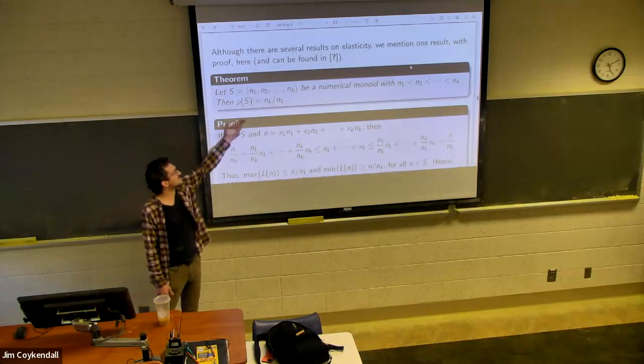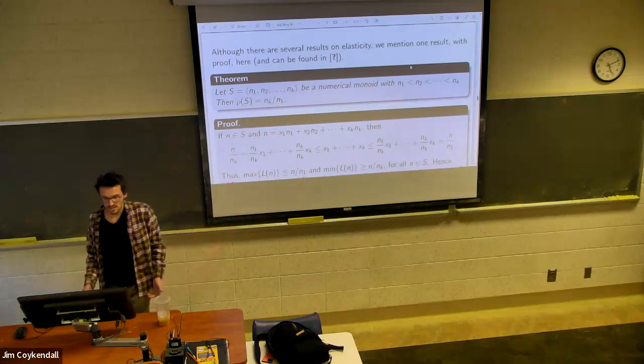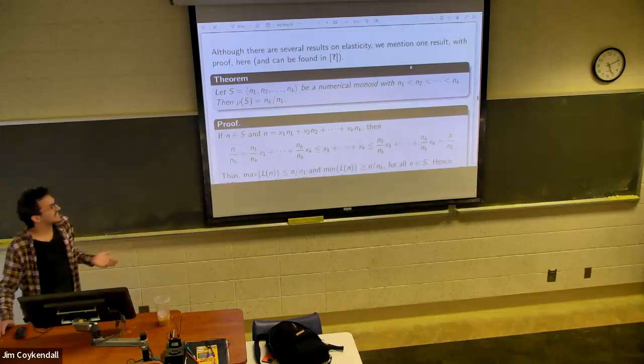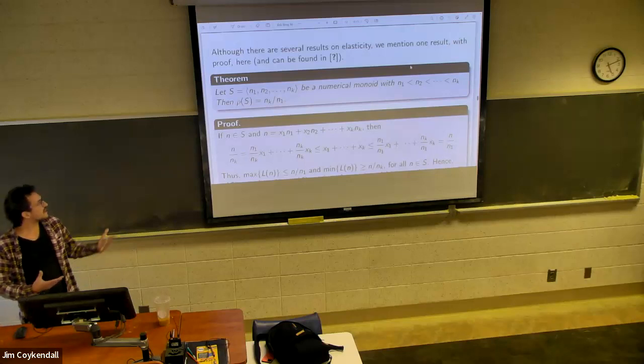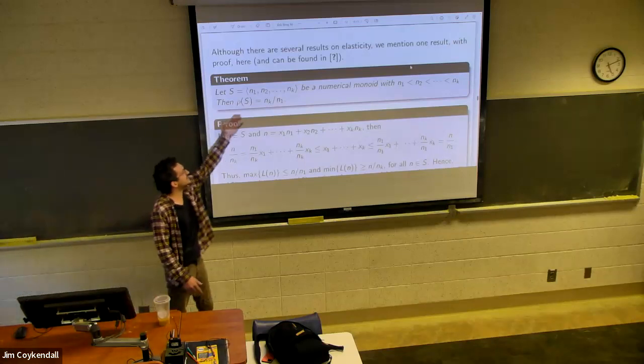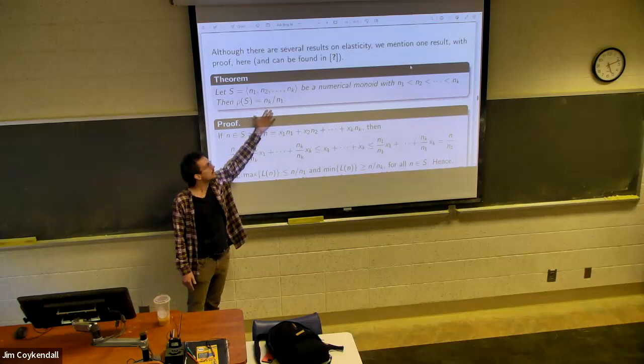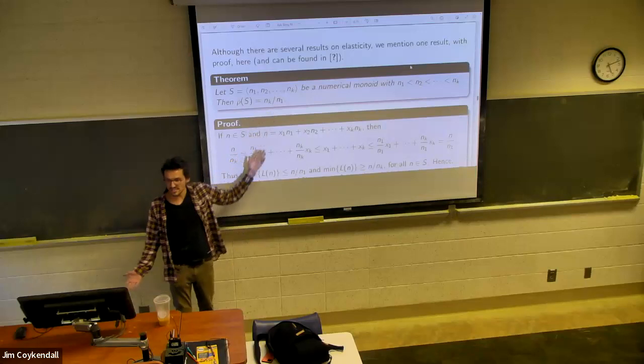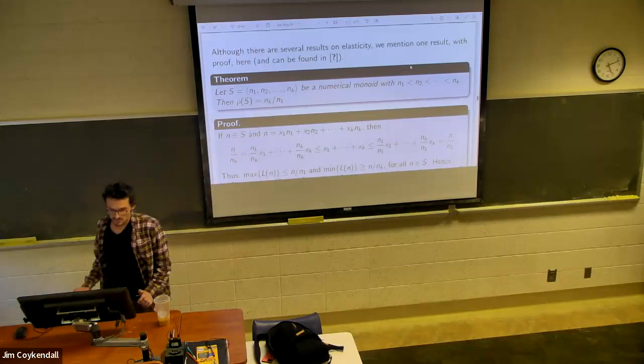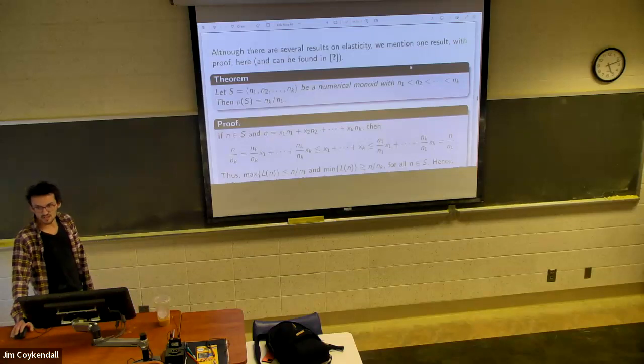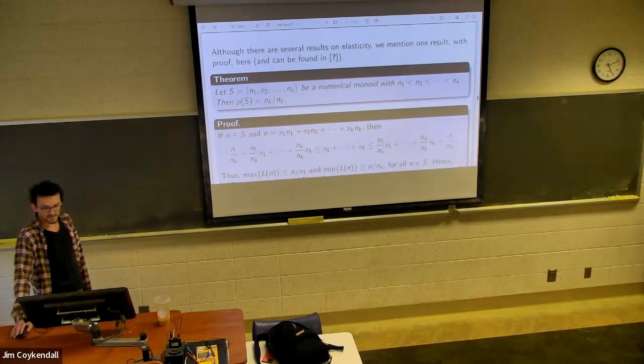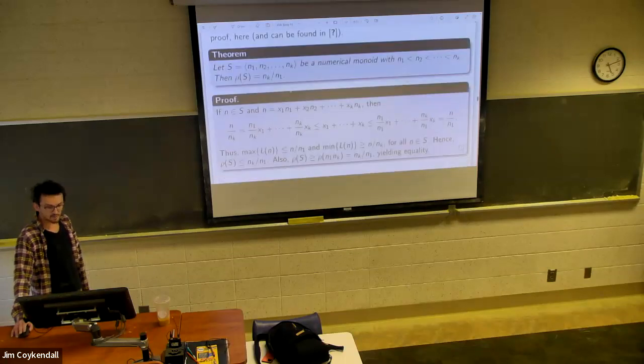Then rho of S equals NK over N1. So this is really cool because it takes something that is a measure with respect to the monoid, and it makes the calculation come down to division of the generators. And the one thing that we like is results that give you something in terms of generators, because you're usually given the generators, right?